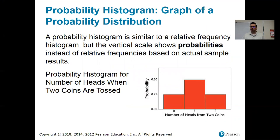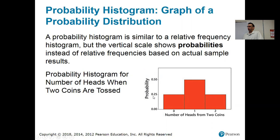Here is that same probability distribution presented as a histogram. Notice the three values — zero, one, and two. The vertical scale is like a relative frequency, except this probability is a theoretical probability. These probabilities are not based on actually tossing two coins a million times. If I did it that way, it would look a little different — it probably wouldn't be exactly 50% of the time getting one head, but it would be close.